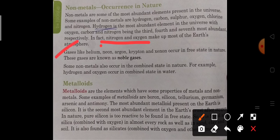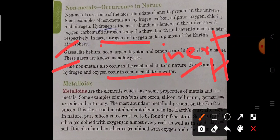The gases like helium, neon, argon, krypton, xenon occur in free state in nature. They are noble gases or inert gases, so they are found alone in nature. Some non-metals also occur in combined state in nature. For example, hydrogen and oxygen occur in combined state in the form of water H2O where H stands for hydrogen and O stands for oxygen.